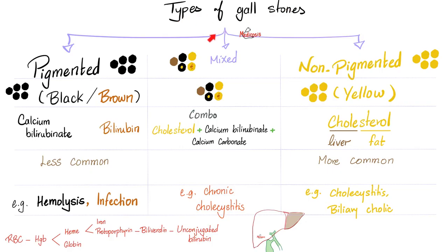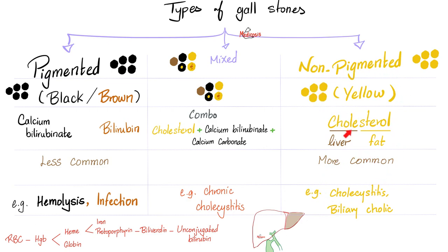Types of gallstones were discussed before in my cholecystitis video. If I have hemolysis, the stones appear black. If infection, they appear brown. If I am fat, fertile, febrile, female in my 40s with lots of kids, they are yellow cholesterol stones.